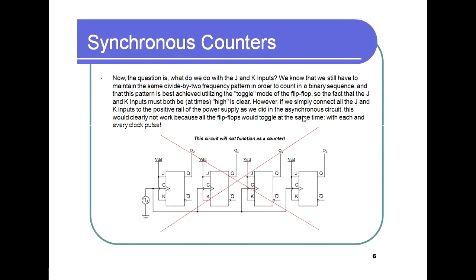However, if we simply connect all the J and K inputs to the positive rail of the power supply, this would not work because all flip-flops would toggle at the same time with each clock pulse. The result would not be what we intended — the circuit will not function as a counter at all.